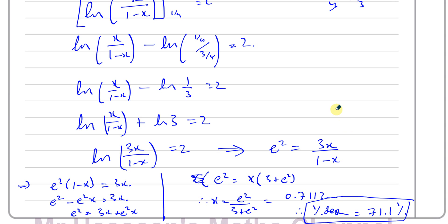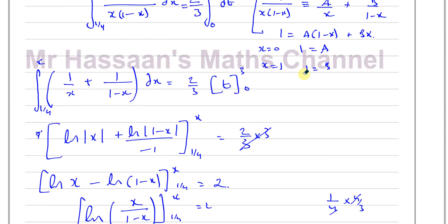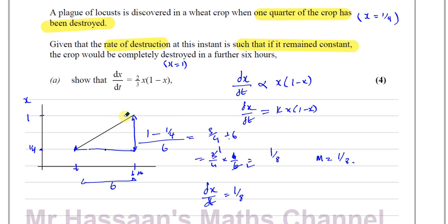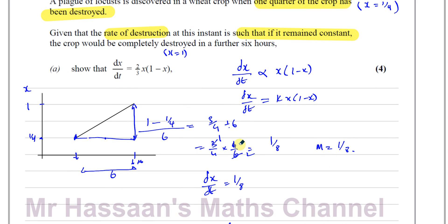A doubt some people might have stems from part A: we worked out that dx/dt at that point was 1/8. Some people would think — if this is a straight line and we want x three hours after this point, why can't we just go to the midpoint, halfway between 1 and 1/4? It doesn't give the correct answer. Why? Because it doesn't say the gradient is constant throughout the whole journey.